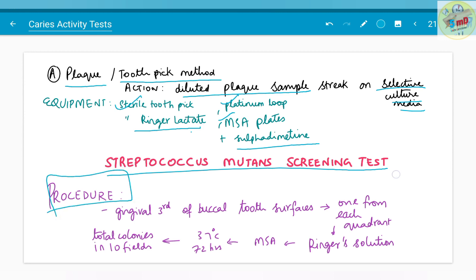The procedure is as follows: gingival third of buccal surfaces, from there plaque is collected, one from each quadrant with a toothpick, and it is diluted in ringer solution and incubated in MSA agar at 37 degrees Celsius for 72 hours. Total colonies in 10 fields are counted.